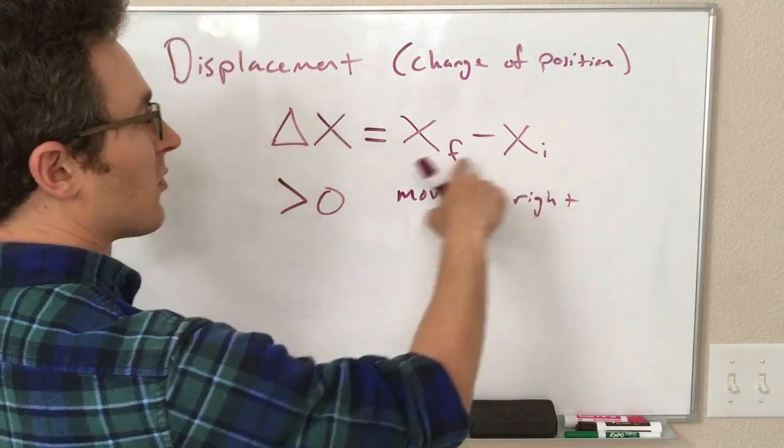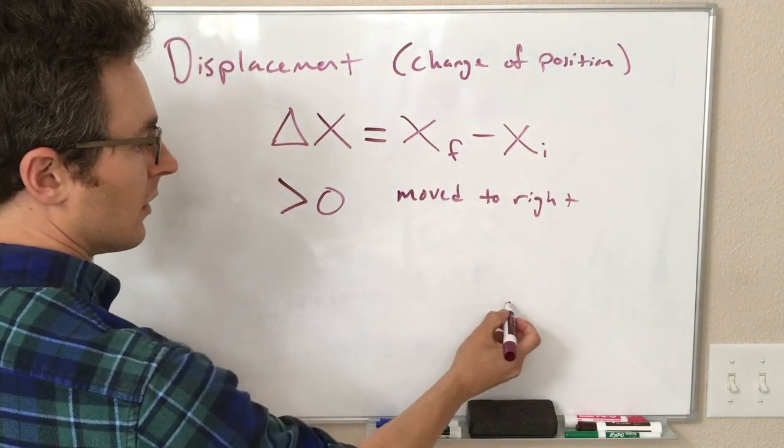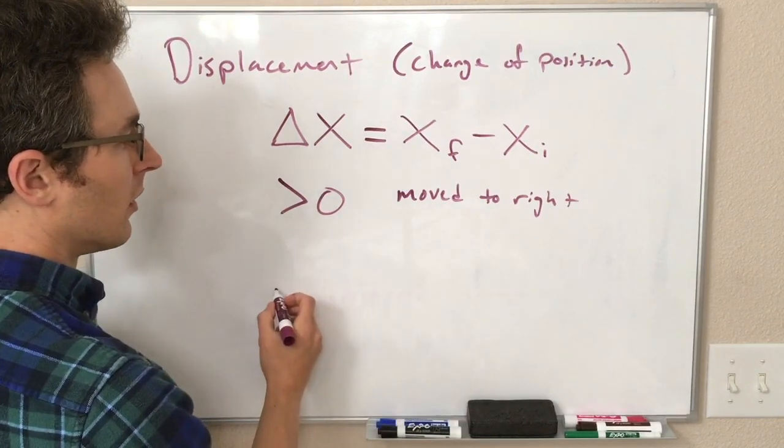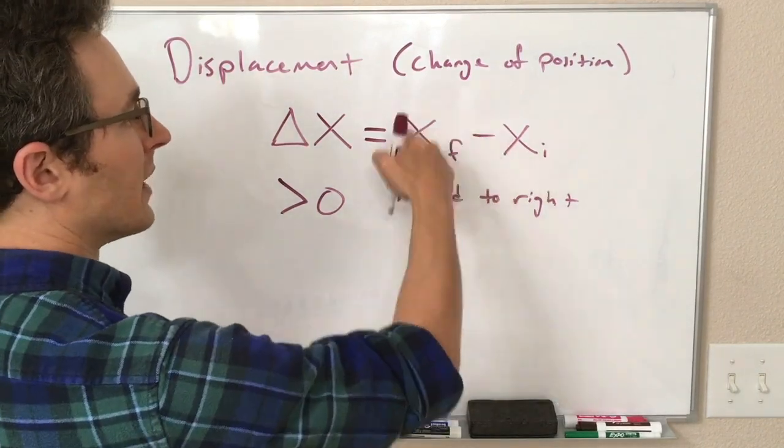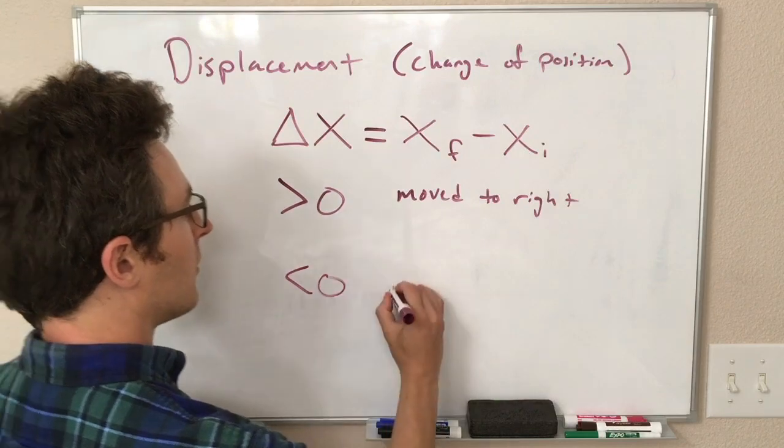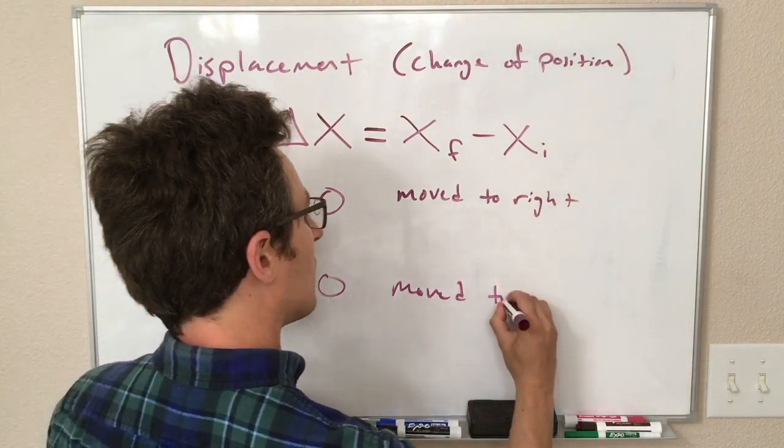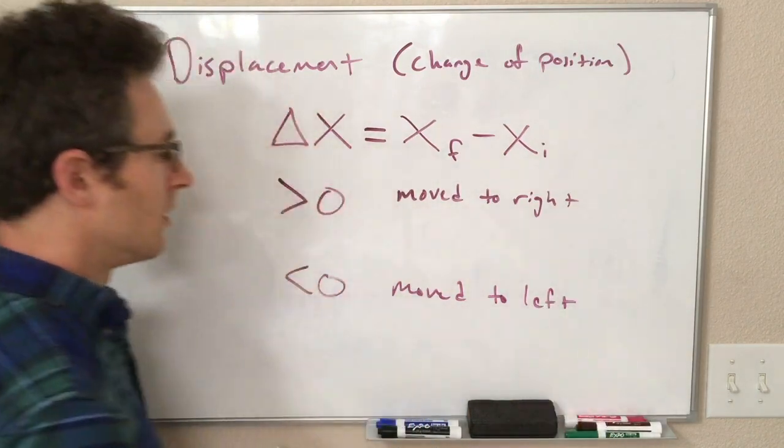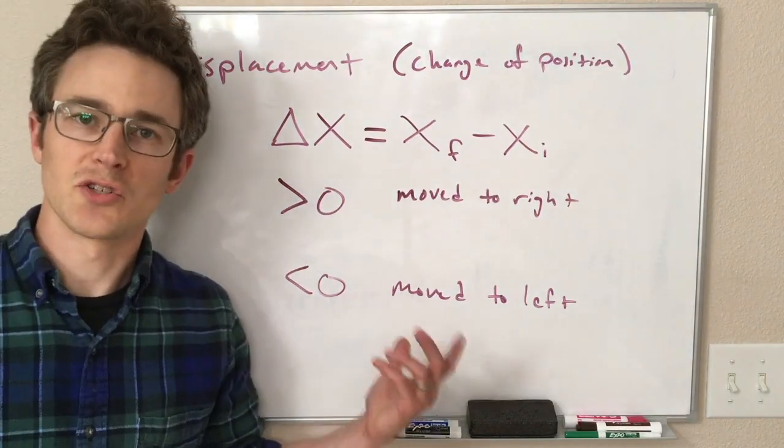Similarly, if x initial is bigger than x final, so we started over here and ended over here, then we moved to the left, right? We would get a negative number here, and we ended up to the left of our initial position.